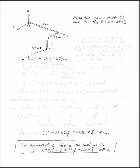Find the moment at O due to the force at C. First thing we need to do is figure out what these points are. So point C is at 1.2 in the x-direction, 2 in the y-direction, and negative 1.1 in the z-direction. Point D is given, that's 1.9, 0.4 and negative 1.7.